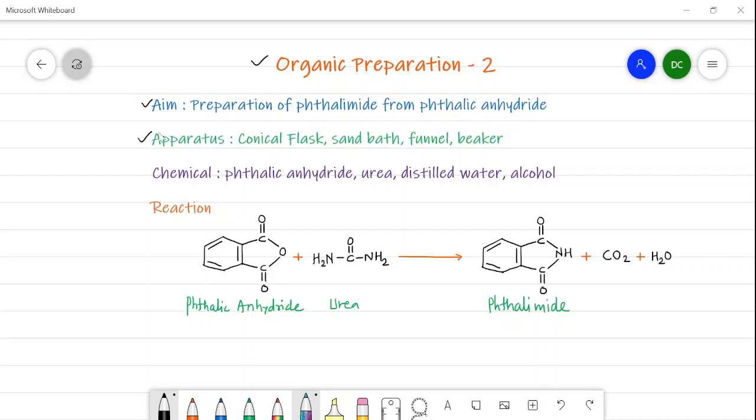apparatus such as a conical flask, sand bath, funnel, as well as beaker, and the chemicals like phthalic anhydride, urea, distilled water, and alcohol.